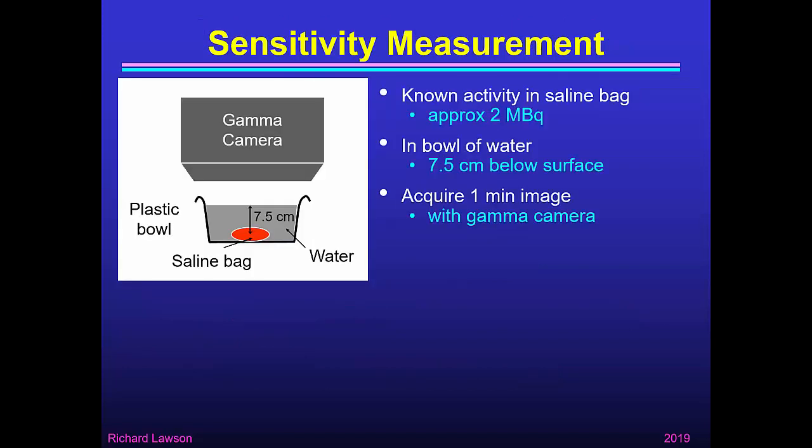To measure system sensitivity, we just need a phantom. I like to use a saline bag which is roughly kidney-sized, and inject into it a known activity of technetium-99m solution — about 2 megabecquerels is sufficient. I place it at the bottom of a bowl of water with 7.5 cm of water from the centre of the bag to the surface, to simulate the depth of the kidney in a patient's back. The water is a good substitute for human tissue because it has about the same attenuating factor. Then place the bowl with the saline bag underneath a gamma camera looking down at it and acquire a one-minute image.